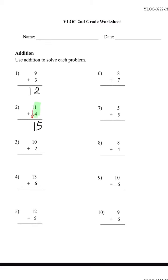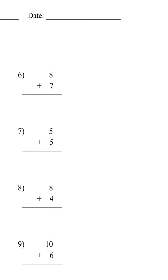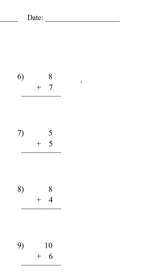We're going to try number 6. We have 8 plus 7. Counting from 8: 9, 10, 11, 12, 13, 14, 15. So again, we put the 5 in the 1's place and 1 in the 10's place. So the answer is 15.